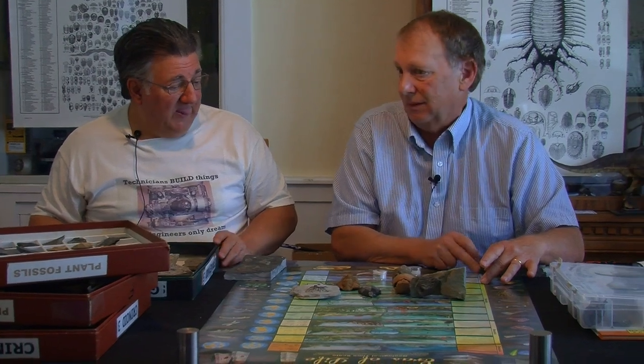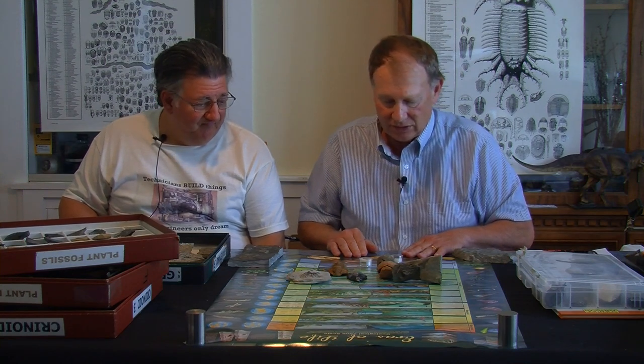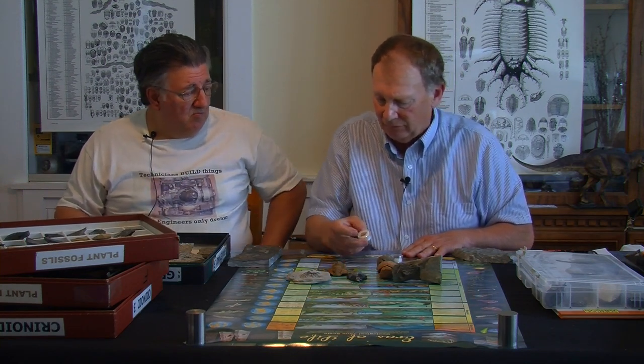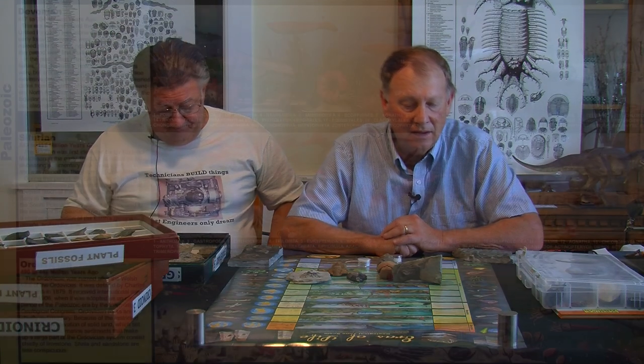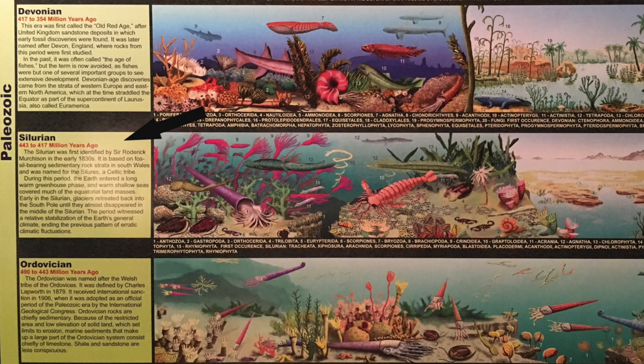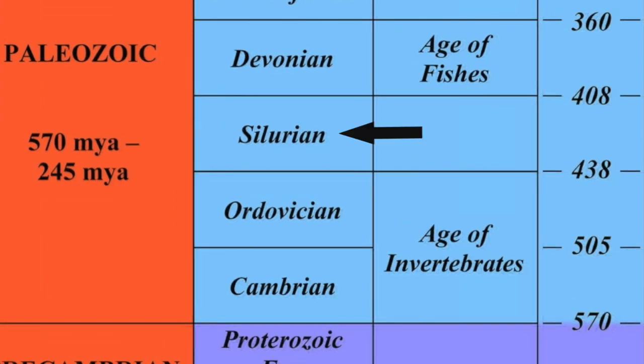But life was extremely simple then — if it even existed as we know it. At best it was a single cell. But you did have some fossils and artifacts relevant to each of those periods. So we're going to pick this up now in the Silurian period, which is about mid-Paleozoic era — the era being the larger division. At that time everything was still marine life.